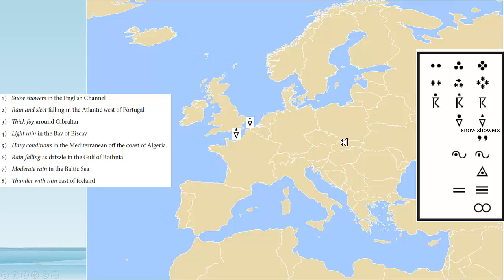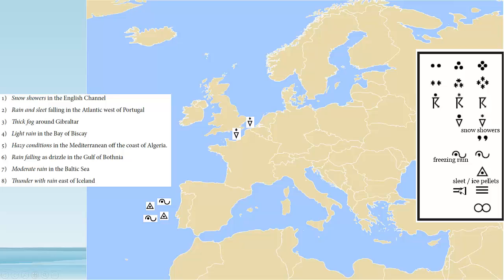Rain and sleet — I was a little confused about that. We have rain up here but didn't know if it was light, moderate, or heavy. I was thinking sleet means freezing rain, so I chose freezing rain and sleet together, and I put them here in the Atlantic west of Portugal — the Atlantic Ocean, Spain and Portugal on the west coast. If you had rain as well as sleet, yeah, that's fine. Thick fog — and if you remember these two for light and thick, or thin and thick, deep fog they said as well. Gibraltar — that is a British territory on the very end of Spain — thick fog around Gibraltar.